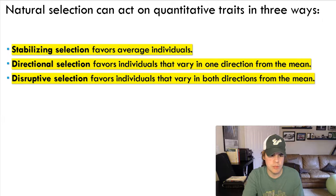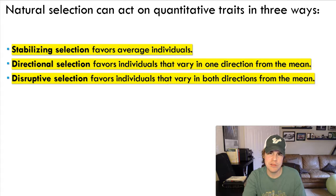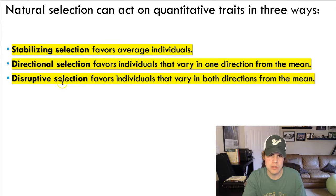Natural selection can act on quantitative traits in three ways: stabilizing, directional, and disruptive. Stabilizing selection favors averages — the mean. Directional selection favors individuals that vary in one direction from the mean. Disruptive selection favors the extremes, not the mean. Let me show you some pictures to help you understand.